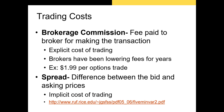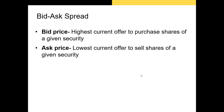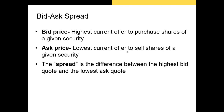The bid-ask spread is another cost of trading, but it's an implicit cost. The bid-ask spread is the difference between the lowest asking price for a stock and the highest bid price for a stock. The bid price is the highest current offer to purchase shares of a given security. The asking price is the lowest current offer to sell those shares. Both of these orders have not been filled yet — they are open orders. The spread equals the asking price minus the bid price.